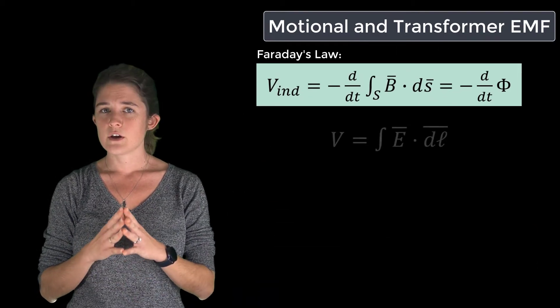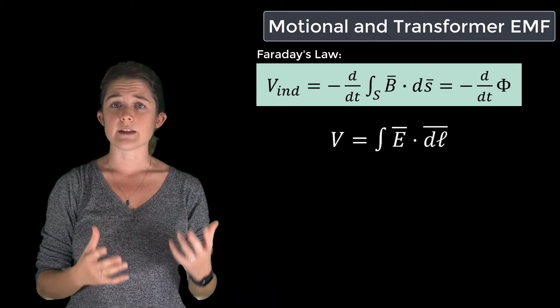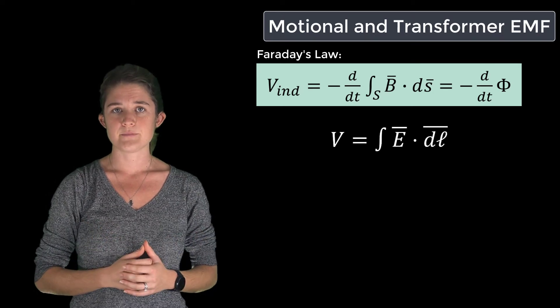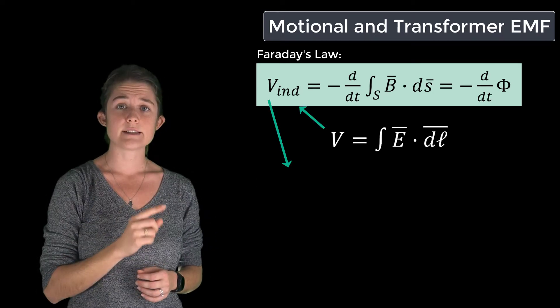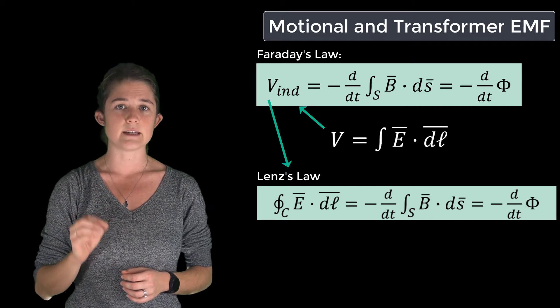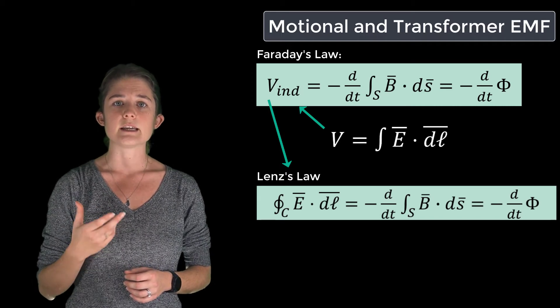Voltage may also be expressed in terms of the electric field. If you recall, the voltage is equal to the integral of the electric field along a line. Therefore, we can convert to Lenz's law, which says that the integral of E dot dl around a loop is equal to